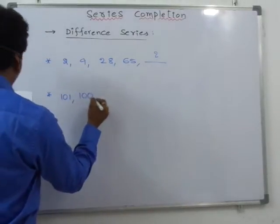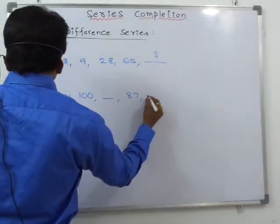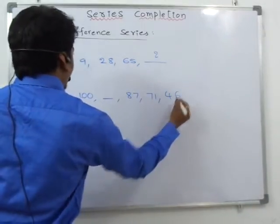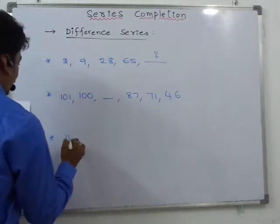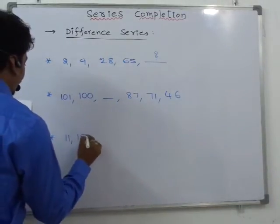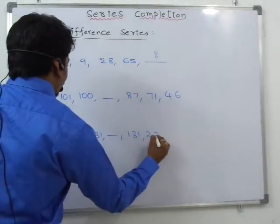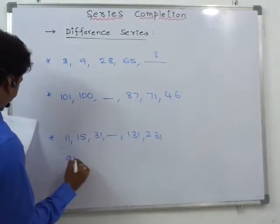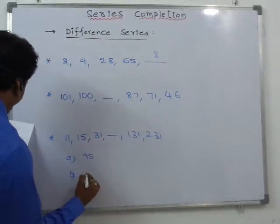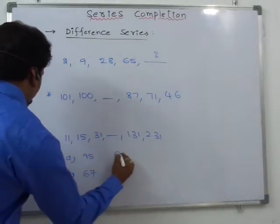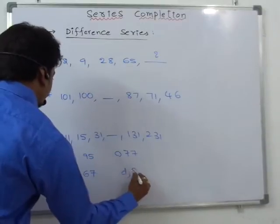Question 2: 101, 100, missing number, 87, 71, 46. Question 3: 11, 15, 31, 131, then 231. The options are A: 95, B: 67, C: 77, D: 87.